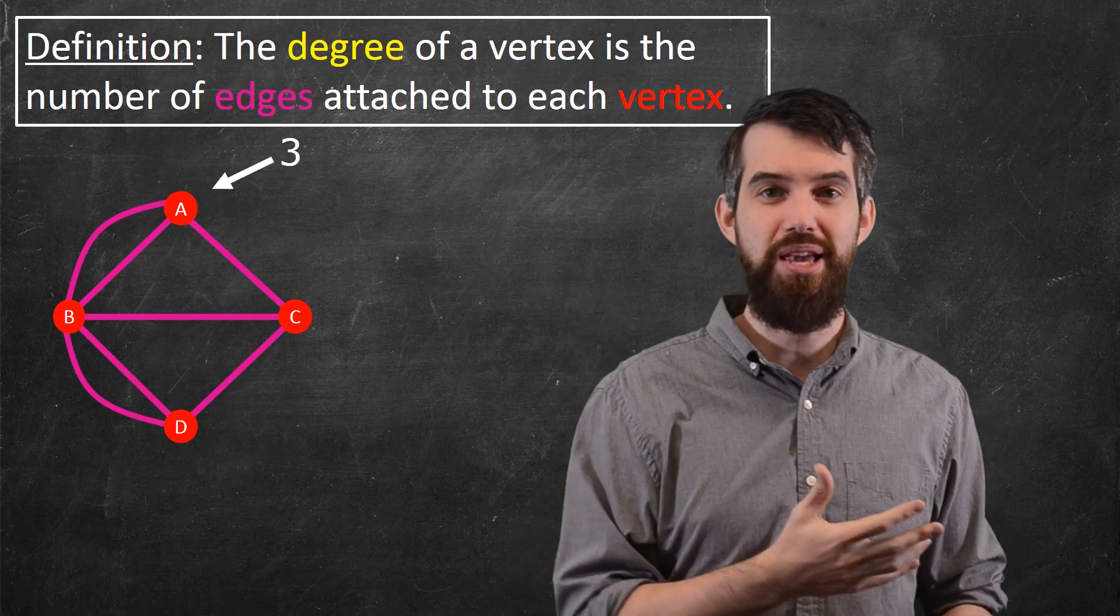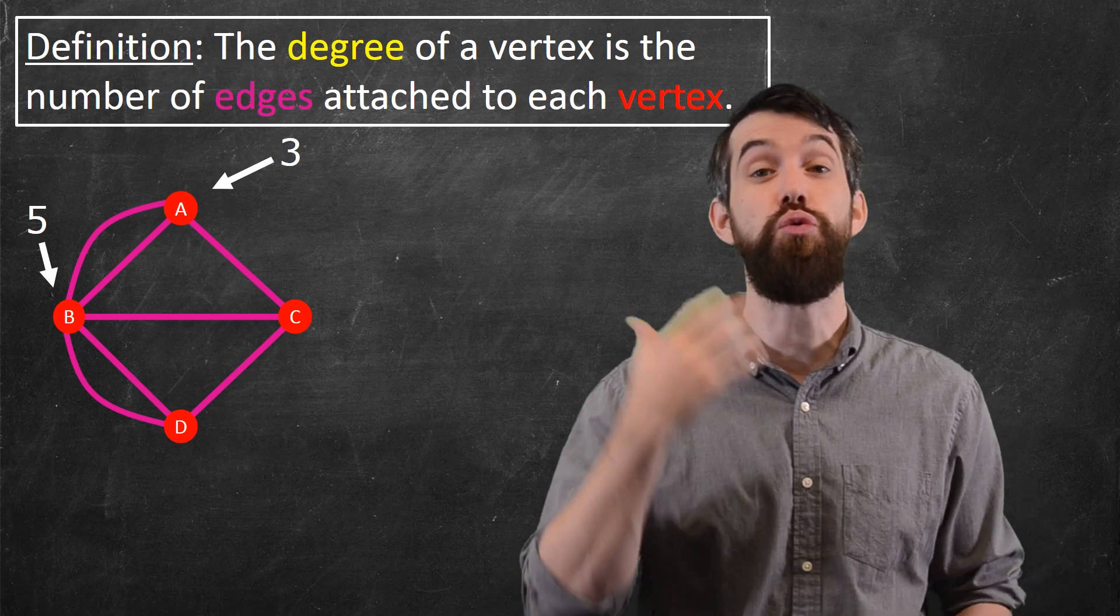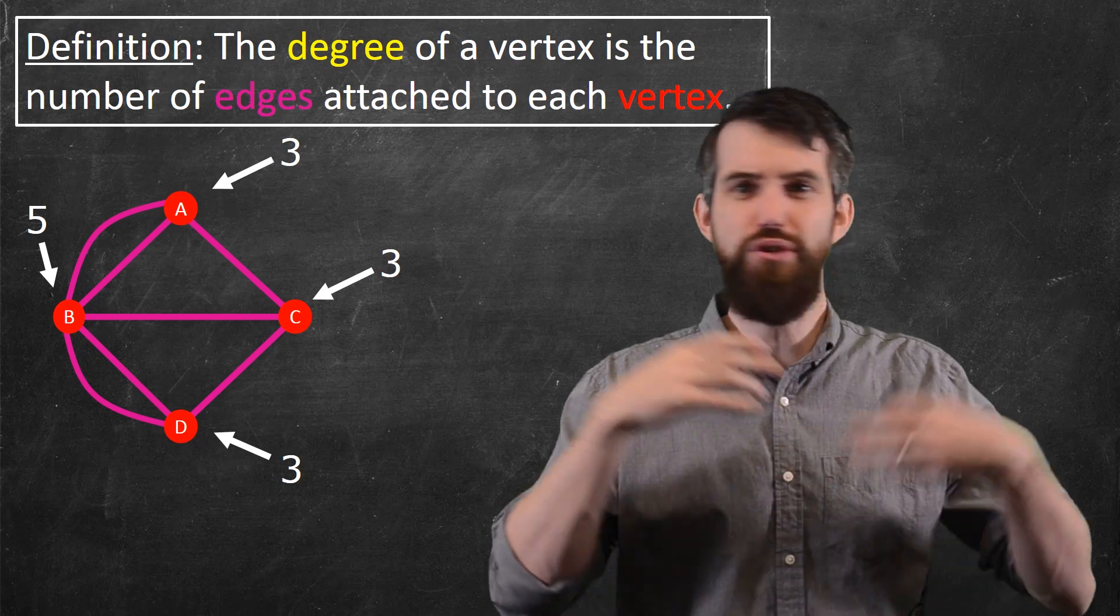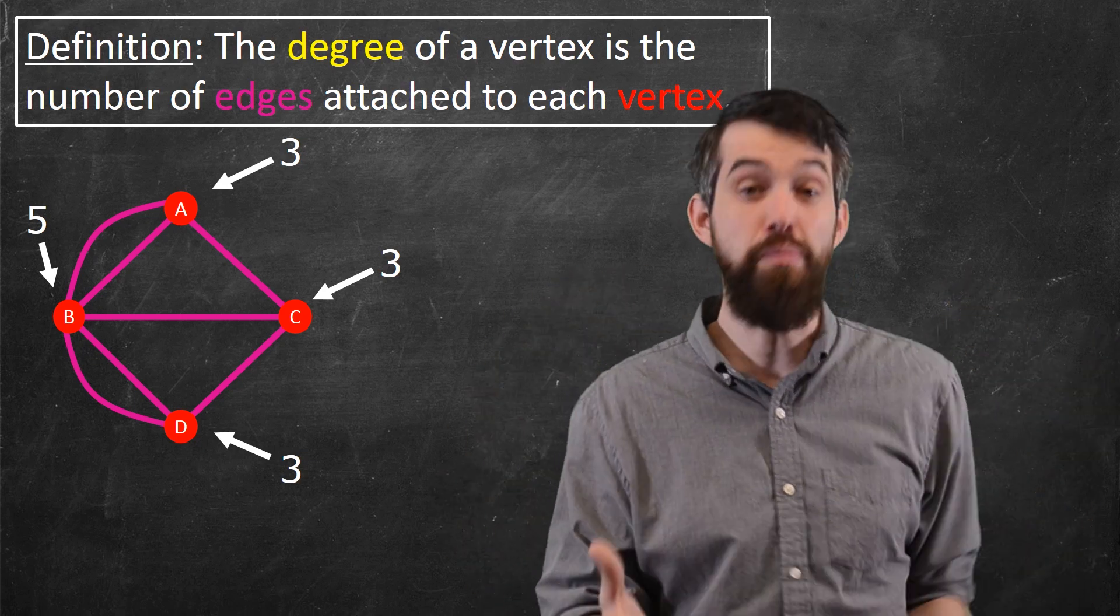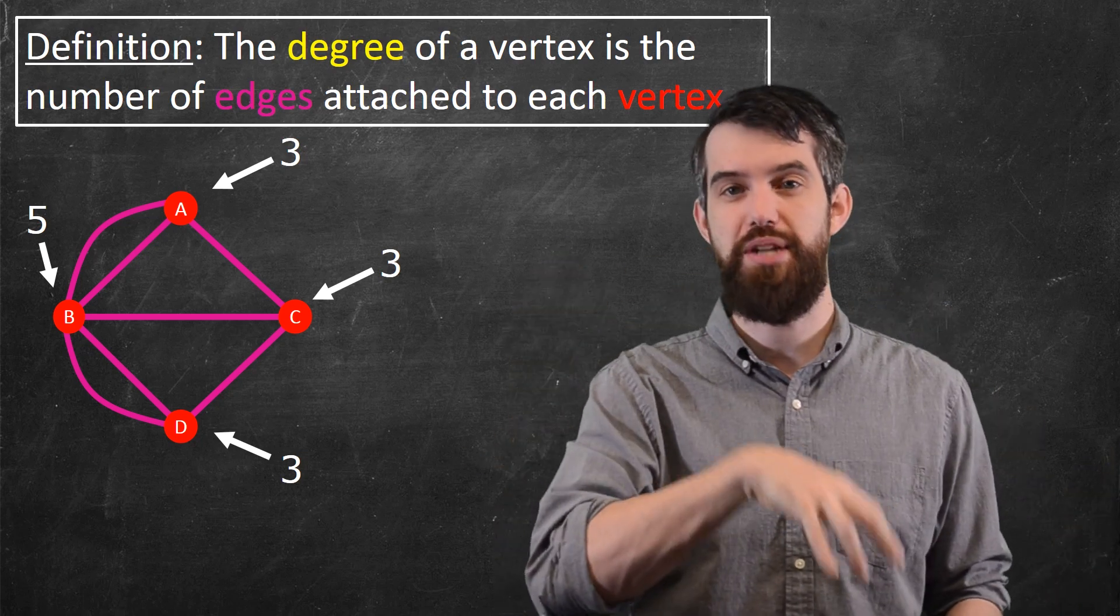If I look over at B, there's five different edges that are leaving from the B. There's three from the C, and three more from the D. So this notion of degree is just a way to quantify something pretty important, which is the number of edges that are leaving from any particular vertex.